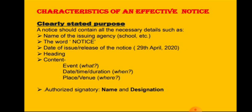Now we will discuss the characteristics of an effective notice. An effective notice should have a clearly stated purpose and should contain all the necessary details such as the name of the issuing agency, for example a school. It should include the word 'NOTICE', the date of issue in expanded form — for example, 29th April 2020 — then a heading, and then the content, where we have to develop the information keeping three WH words in mind: what, when, and where.